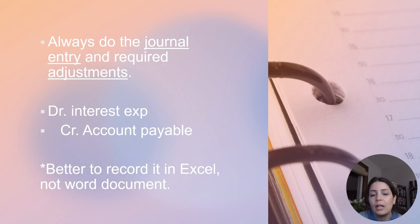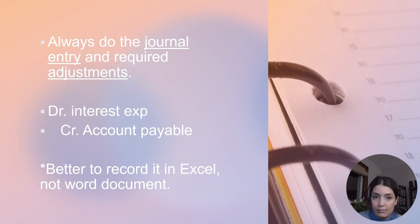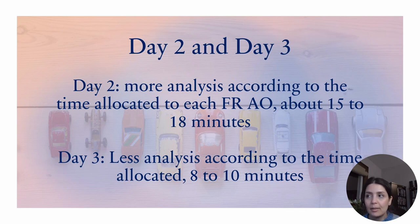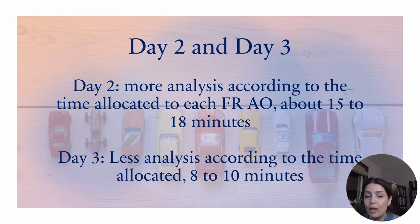Always do the journal entry in Excel, not the Word document. Keep it simple in Excel. If you want to get C and the AO needs a journal entry and adjustment, you should do it — don't think about it, just do it. In Day 2 and Day 3 there are going to be FR issues for sure, but there are differences. In Day 2 there is going to be more analysis according to the time allocated for each FRAO.